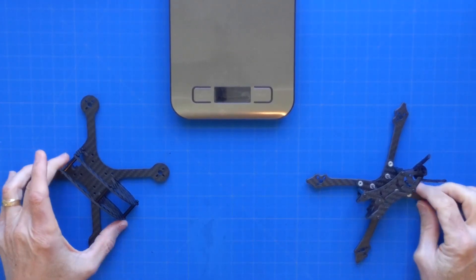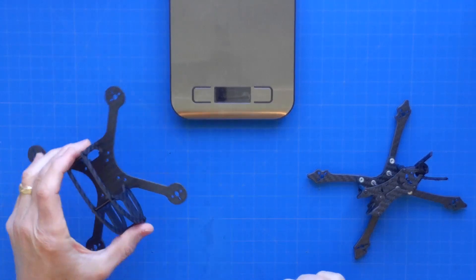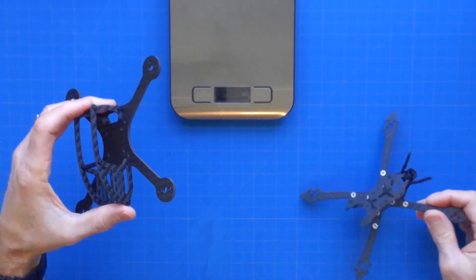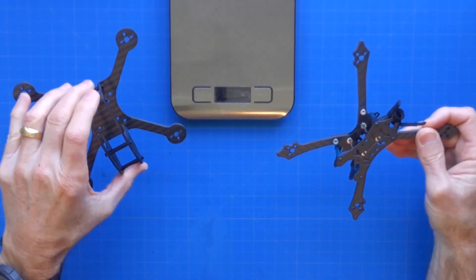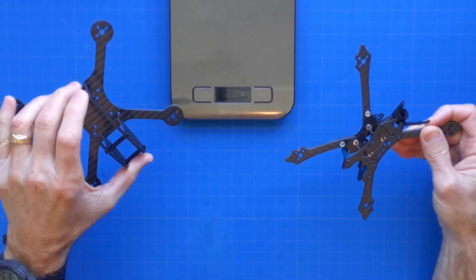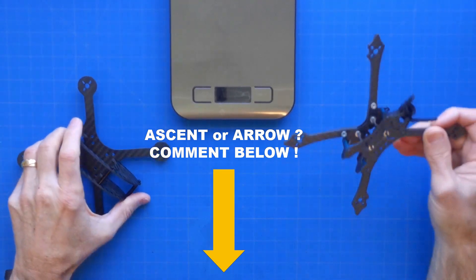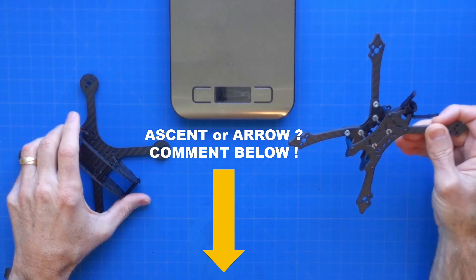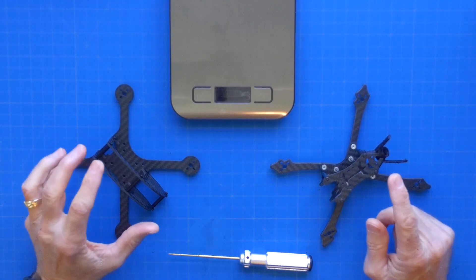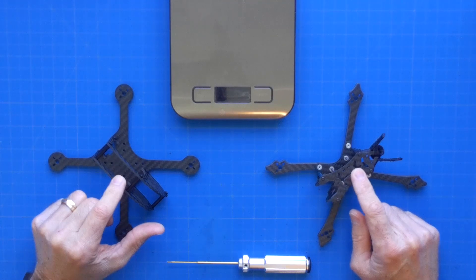So those are the parameters that we compared on both of these frames. Here's where I need your input. Which of these frames, the Ascent or the Arrow, do you think we should build out? If you think we should build the Ascent just put the word Ascent in the comments below. If you think we should build the Arrow put the word Arrow in the comments below. We'll go ahead and take all of your inputs into consideration as to which one of these nice frames we'll use to build out our MicroFPV 3-inch Quadcopter.